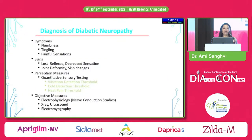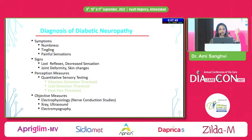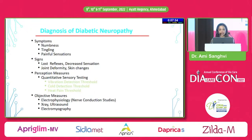Diagnosis of diabetic neuropathy involves symptoms — numbness, tingling, painful sensations — and signs like lost reflexes, decreased sensation, joint deformity, skin changes. Then quantitative sensory testing using a biothesiometer, tuning fork, or 10-gram monofilament, along with objective measures including electrophysiology, electromyography, X-ray and ultrasound.